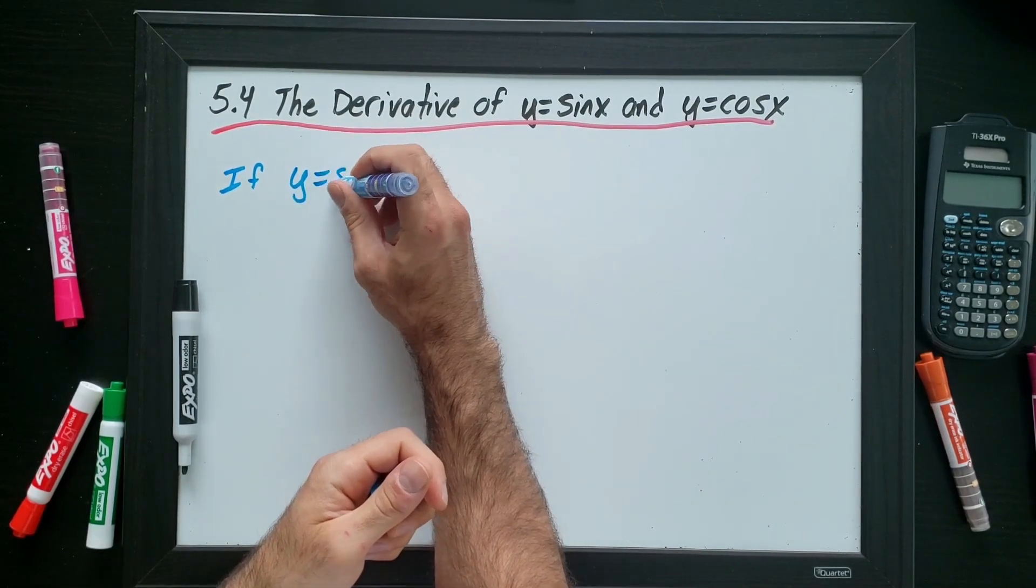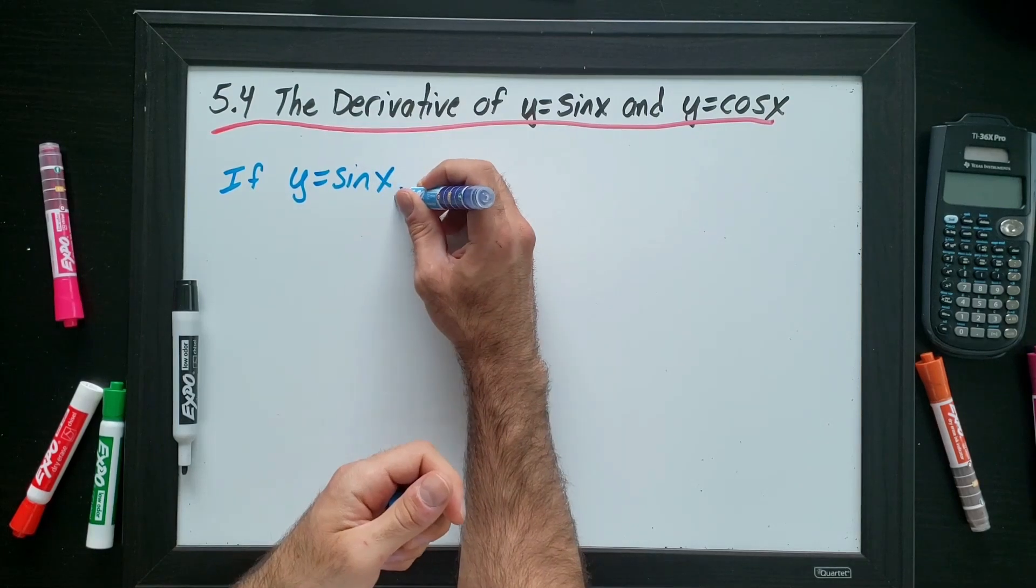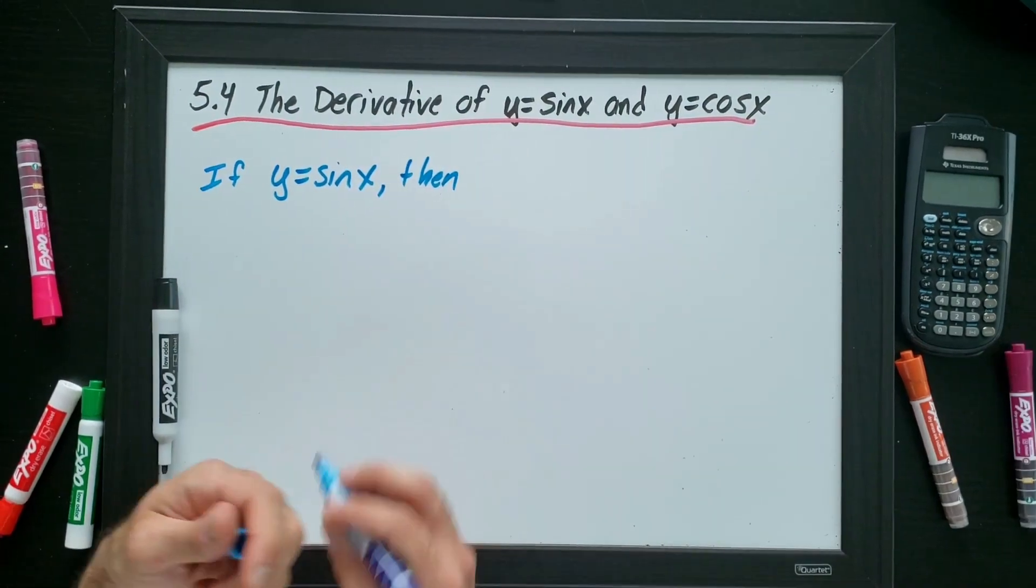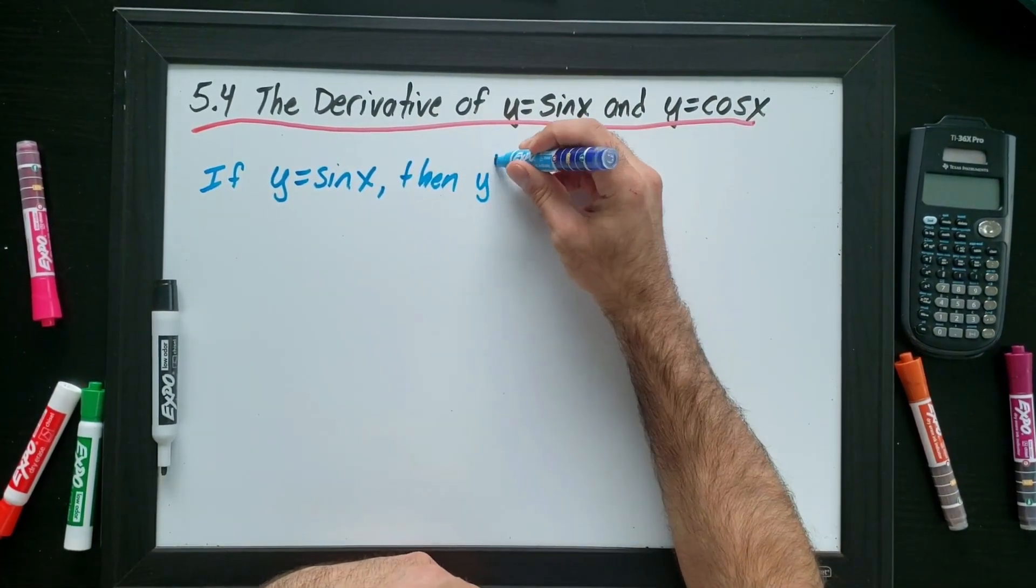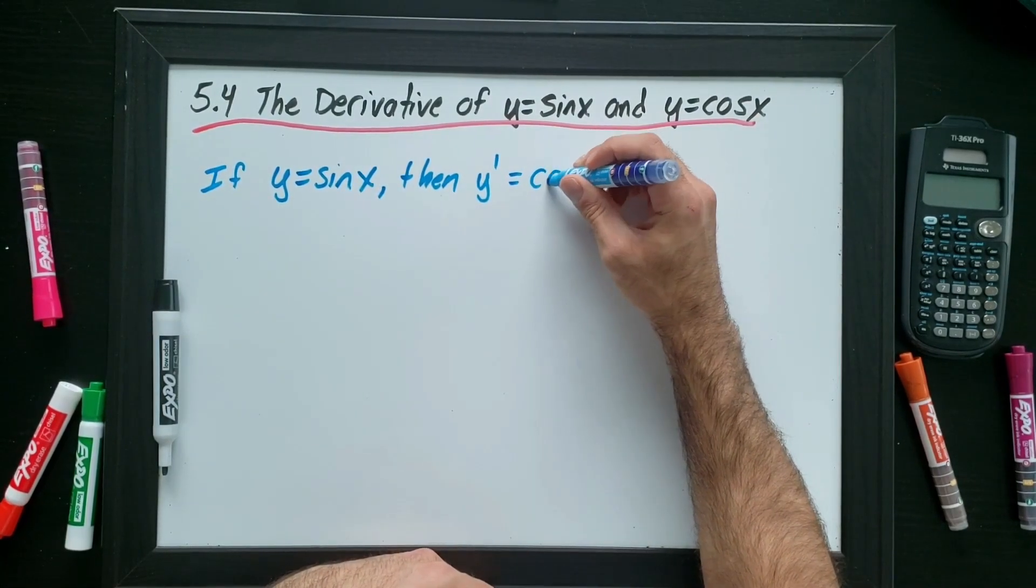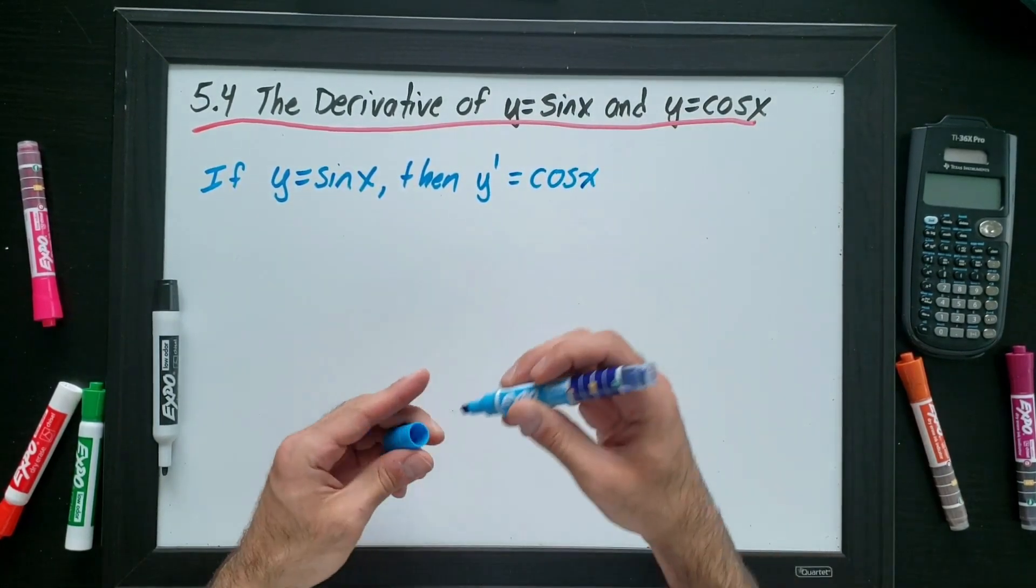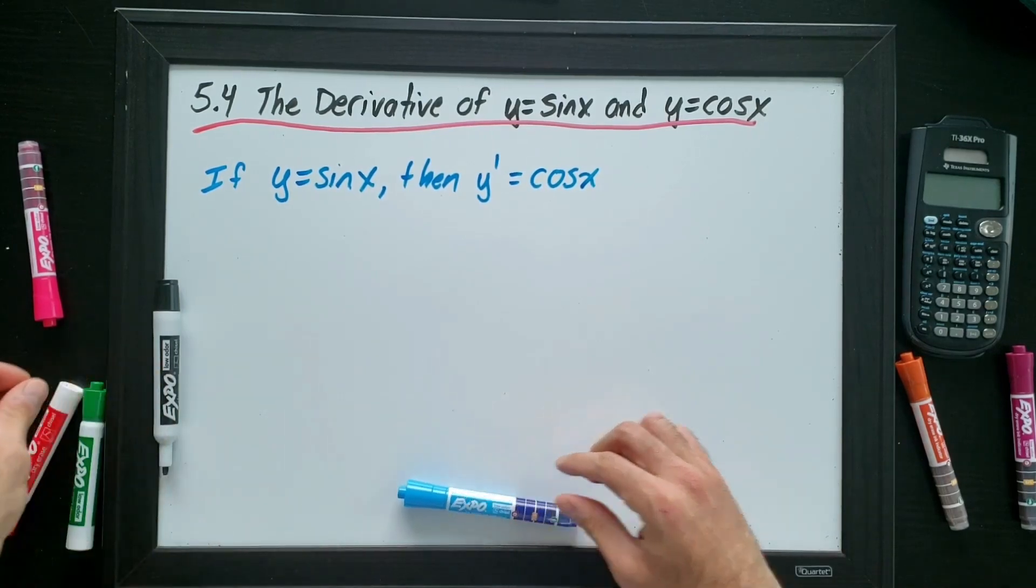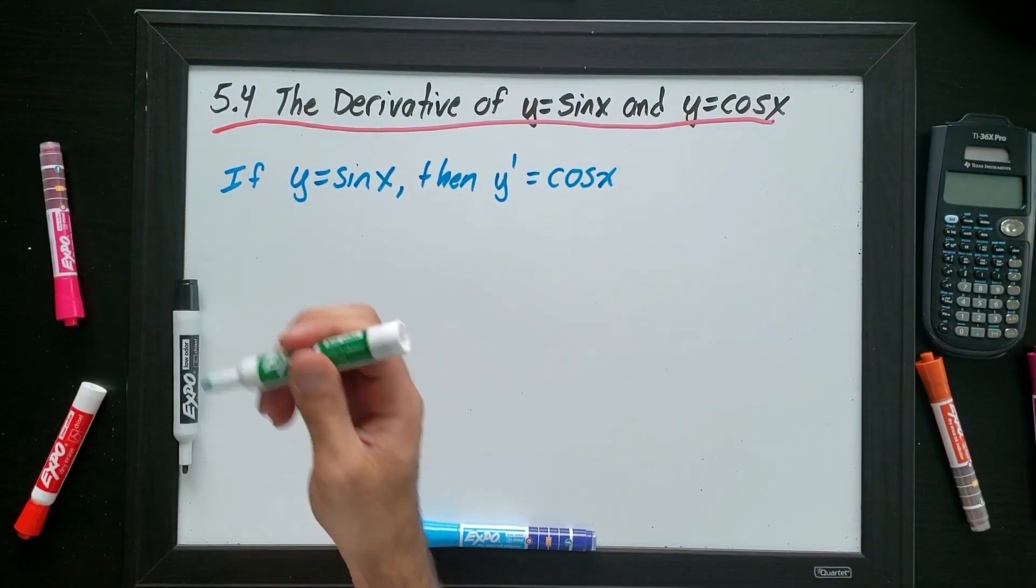If y equals the sine of x, then y prime equals cos x. And that's it. That's the derivative of sine x. I'm going to write the derivative now for cos x.